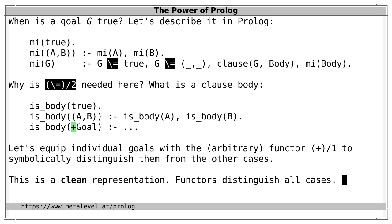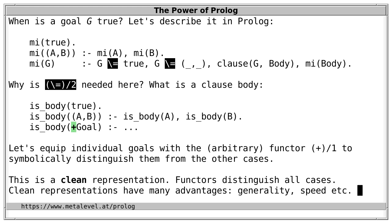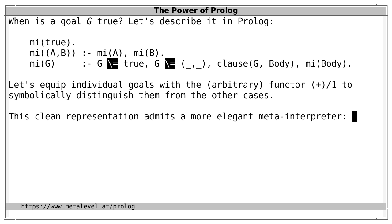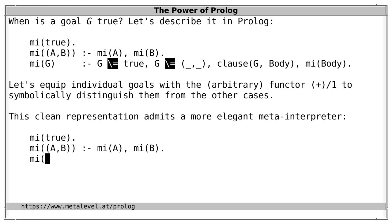For example, let's adopt a convention that we distinguish individual goals by using the functor '+'. We wrap each individual goal in a compound term with functor name '+' and arity one, with the goal as the single argument. If we do that, we obtain a so-called clean representation, because now all cases are symbolically distinguished by a dedicated functor: the atom true, conjunctions, and individual goals wrapped in '+(G)'. Clean representations have many advantages — they are good for generality and efficiency. And a clean representation admits a more elegant meta-interpreter.